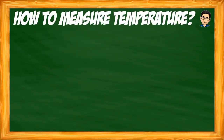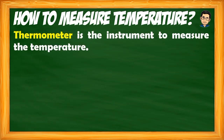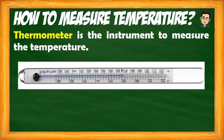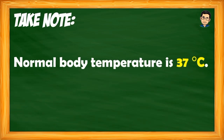To measure temperature — to find out how hot or cold a place or object is — we use an instrument called the thermometer. It is a small instrument, similar in shape to a ballpen. This is the same instrument nurses use on patients to determine how warm a patient's body is and whether they have a fever.